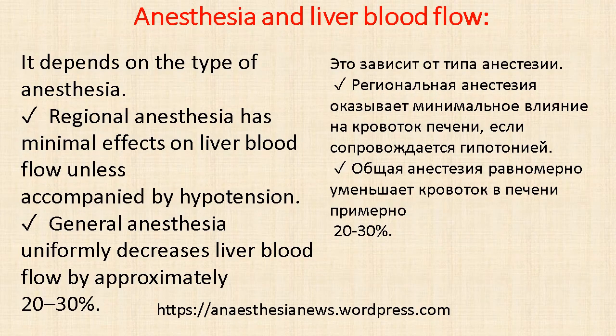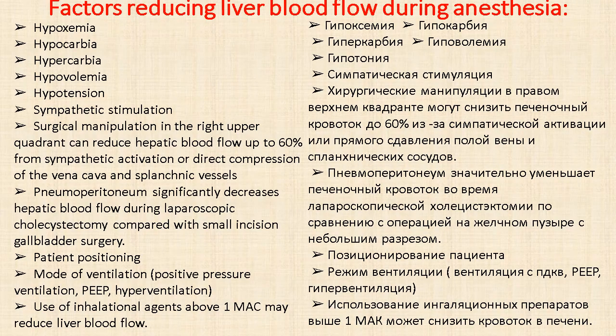Regarding anesthesia and liver blood flow: regional anesthesia has minimal effects on liver blood flow unless accompanied by hypotension. General anesthesia uniformly decreases liver blood flow by approximately 20 to 30%. Factors reducing liver blood flow during anesthesia include hypoxemia, hypocarbia, hypovolemia, hypotension, sympathetic stimulation. Surgical manipulation in the right upper quadrant can reduce hepatic blood flow up to 60% from sympathetic activation or direct compression of the vena cava and splanchnic vessels. Pneumoperitoneum significantly decreases hepatic blood flow during laparoscopic surgery compared with open incision surgery.